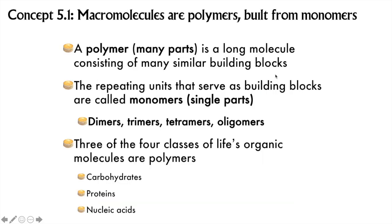Three of the four types of macromolecules are polymeric, meaning they're built up from long chains of similar building blocks. Polymer means many parts, and the single units are called monomers. We can put single parts together into two-part dimers or three-part trimers. The prefix for a few in Greek is oligo, so an oligomer is a chain of a few monomers.